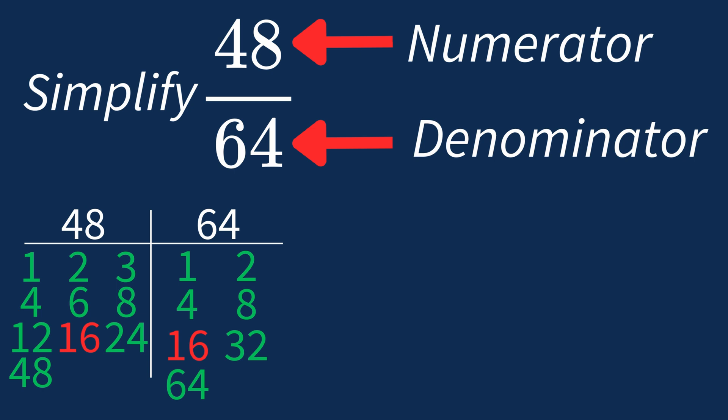This means we can divide both the numerator and denominator by 16 to simplify the fraction. Dividing the numerator, 48 by 16, gives us 3. Dividing the denominator, 64 by 16, gives us 4.